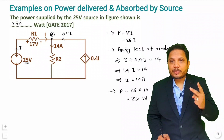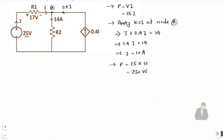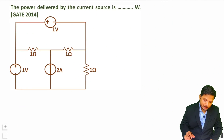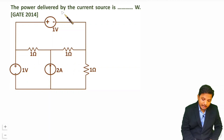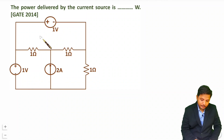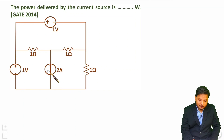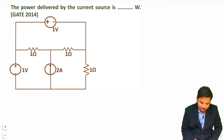Let me give you the second question — that will improve your understanding further. In the second question, the power delivered by the current source is how much? If you observe this circuit, it has only one current source and it is delivering power.